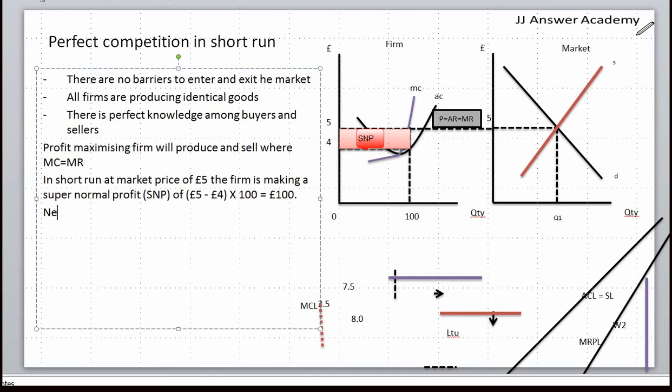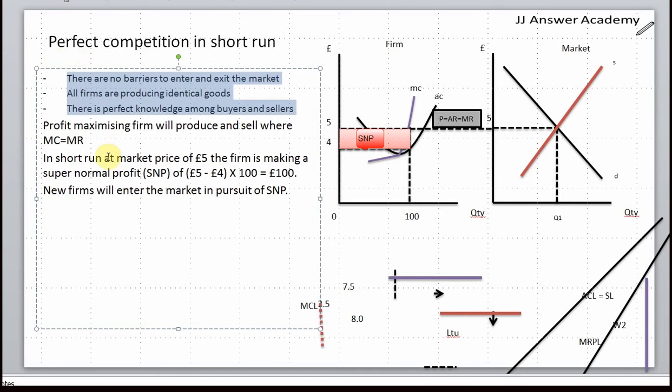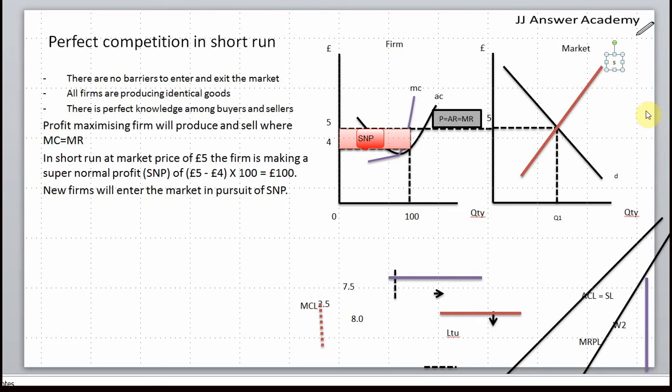Why do you think they are able to enter the market? Copyrights would be a barrier, wouldn't it. But there are no barriers to enter and exit the market. Because there are no barriers to enter and exit the market, and there is perfect knowledge, they know what it takes to make those goods between buyers and sellers. That's why they'll enter the market.